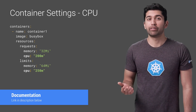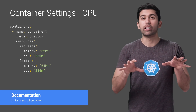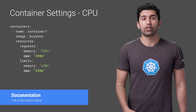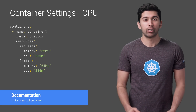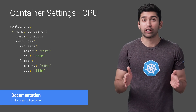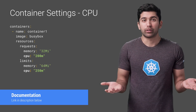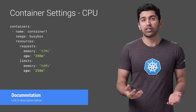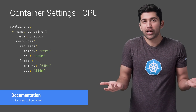CPU resources are defined in millicores. If your container needs two full cores to run, you'd put the value 2000m. If your container only needs one fourth of a core, you would put a value of 250m. One thing to keep in mind is that if you put a value in that's larger than the core count of your biggest node, then your pod will never be scheduled. For example, if you have a pod that needs four cores but your Kubernetes cluster is just comprised of two-core VMs, your pod will never be scheduled.